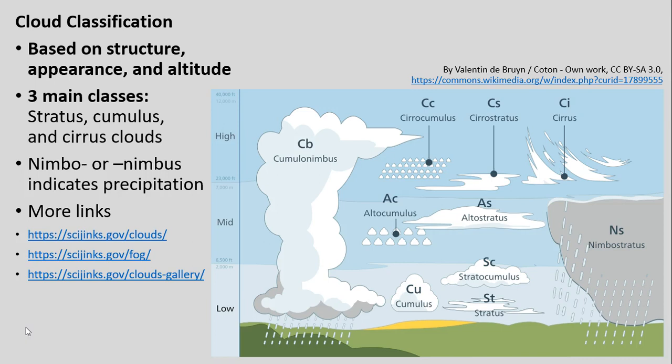There are three main classes we'll be looking at. We have stratus, which are kind of lower layered clouds; cumulus; and then cirrus clouds. Also note that sometimes we tack on 'nimbo' or 'nimbus' to the name, which generally just indicates precipitation coming along with that type of cloud.